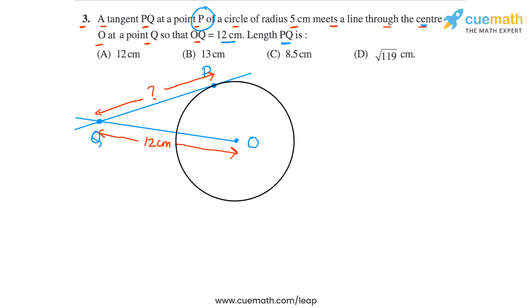And we also know that the radius of the circle is 5 centimeters. So if we join O and P, this will be 5 centimeters. So this is something that we know.